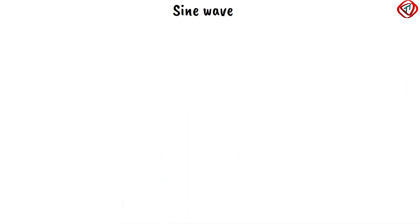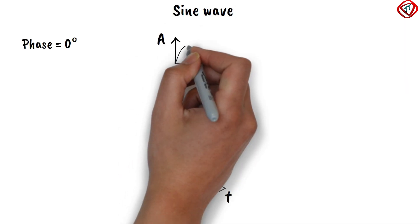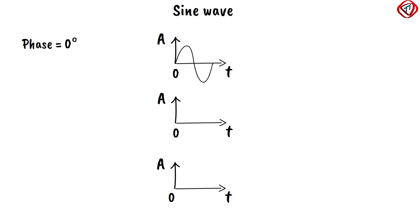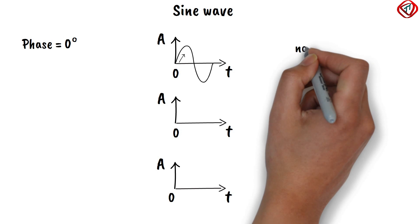A sine wave with phase zero degrees starts at time zero with a zero amplitude and the amplitude is increasing. It means the sine wave is not shifted.